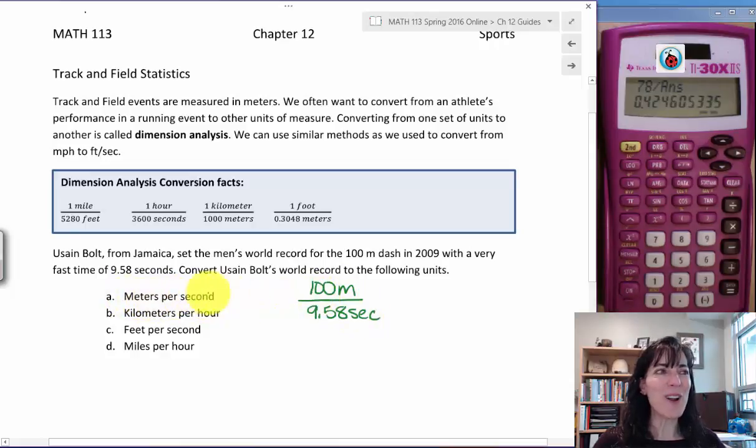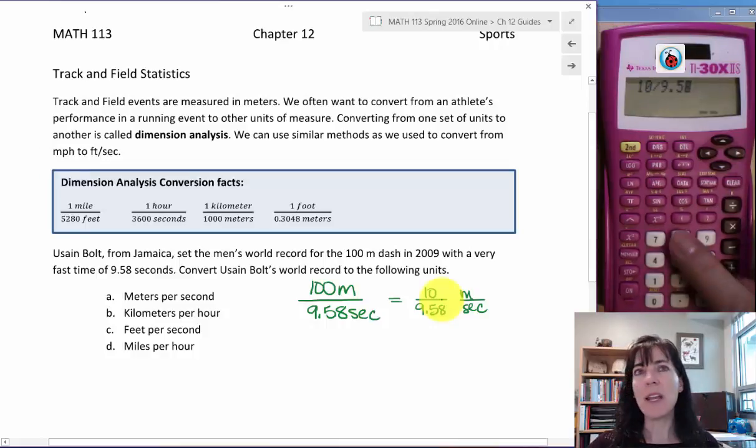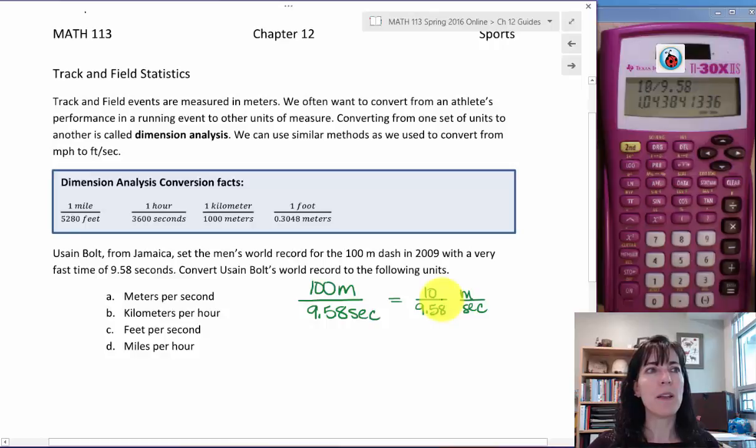So if you forget, you can just look there and go, okay, I have to put it in that order. Put the meters over the seconds. And then we really just want to do 100 divided by 9.58. And then we have meters per second. So we're finding a unit rate again. How did that convert to 10? Go back.